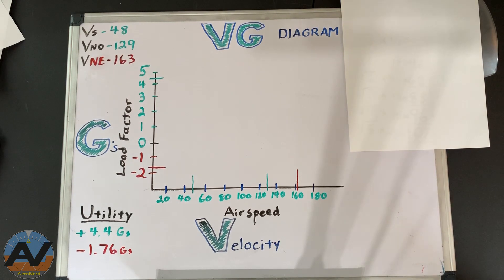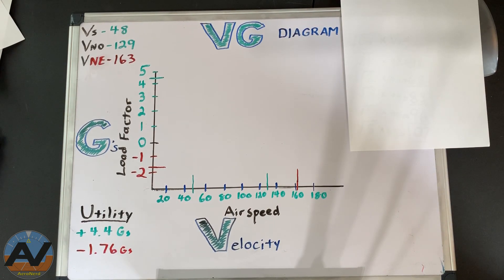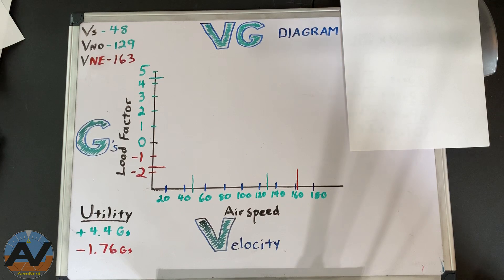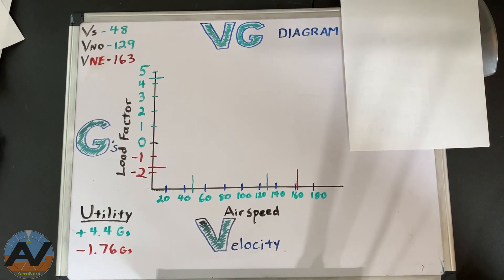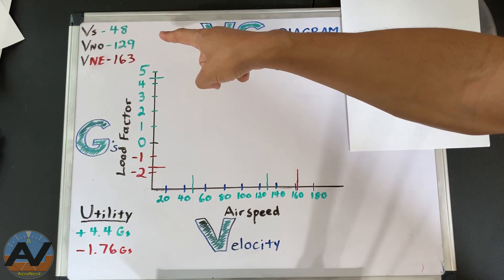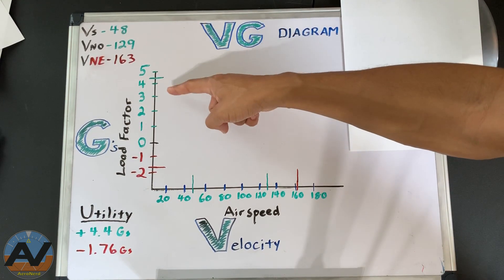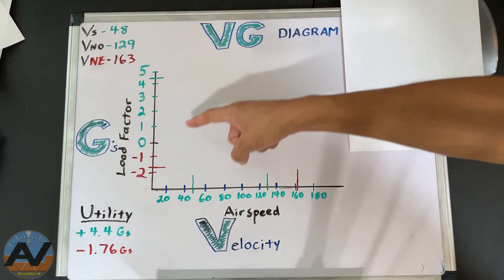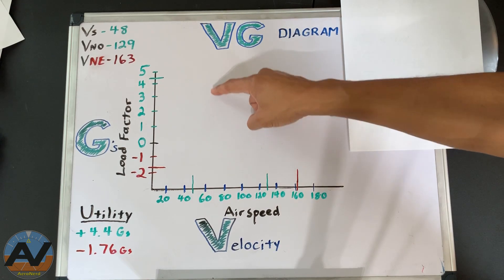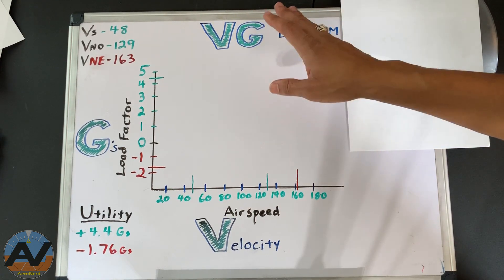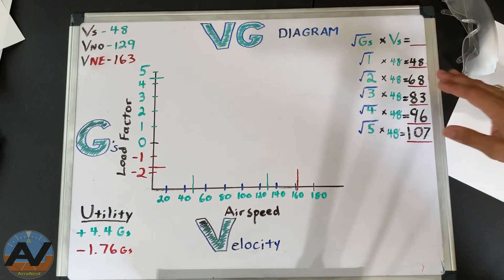This next part is probably the most complicated part of the VG diagram. We have to understand that lift is proportional to the square of the velocity. For example, if you have an aircraft traveling at 200 knots, it has four times more lift than an aircraft traveling at 100 knots. So to reverse this, we take the square root of 1 times the stall speed, the square root of 2 times the stall speed, the square root of 3 times the stall speed, and so on. I've already done these calculations ahead of time, rounded off, to make this easier.